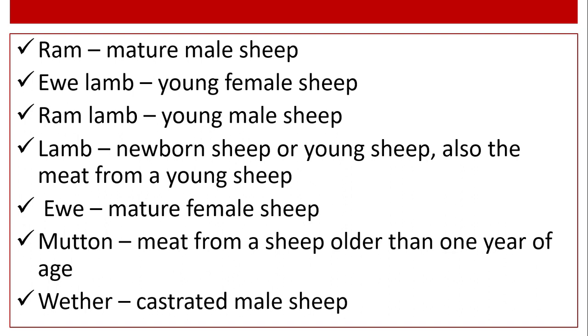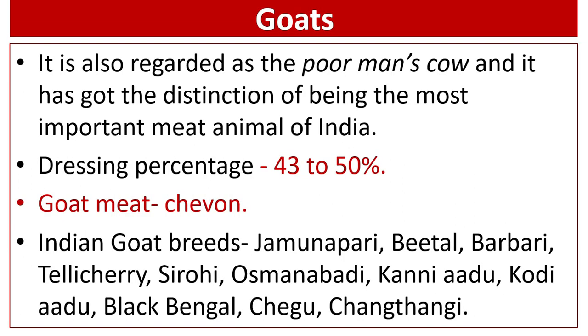Meat from a sheep older than one year of age is known as mutton. Castrated male sheep is known as wether.